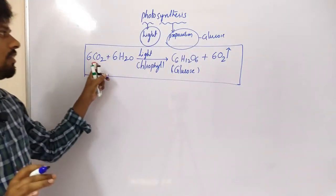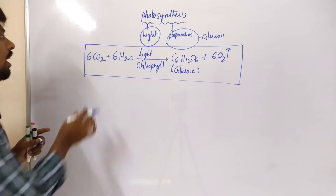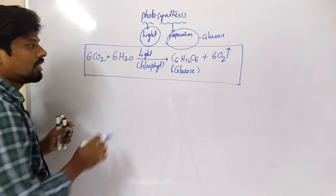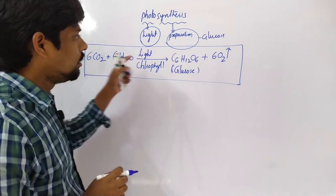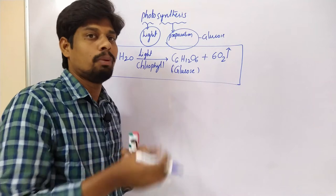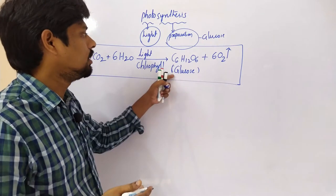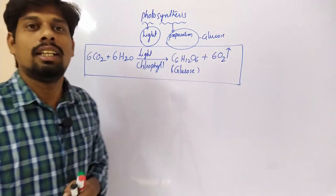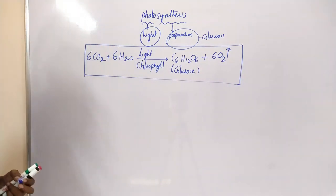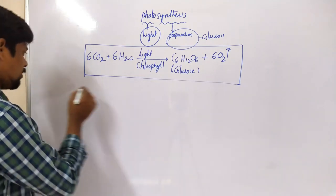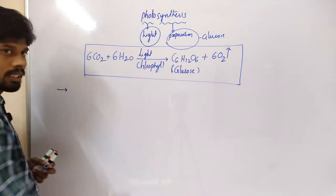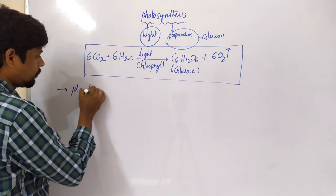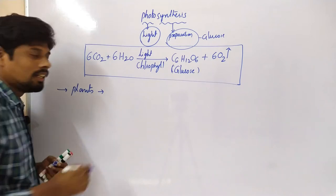If you understand this equation, we will see where actually 6 CO2 is utilized, where water is utilized, how glucose is produced, where this oxygen is released into the environment. Photosynthesis occurs in higher plants in the thylakoids.